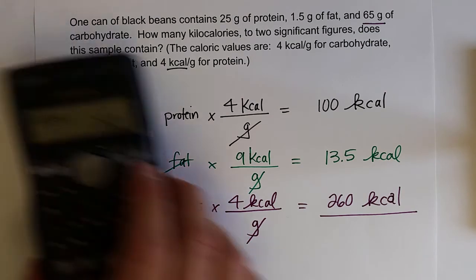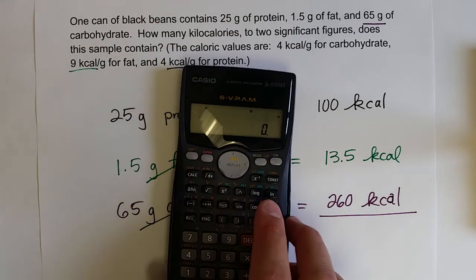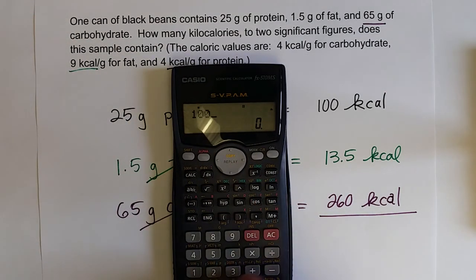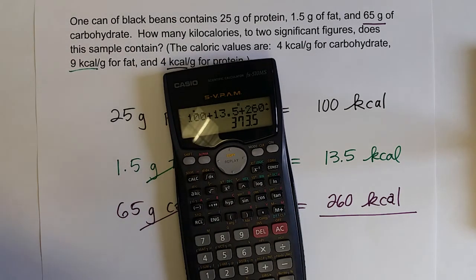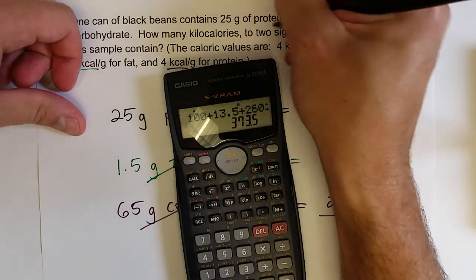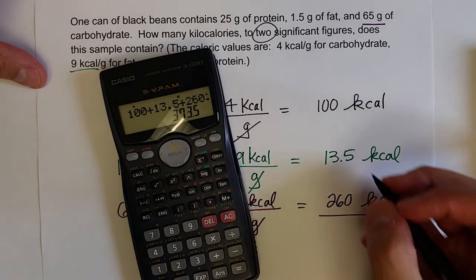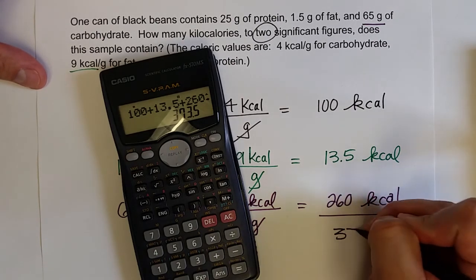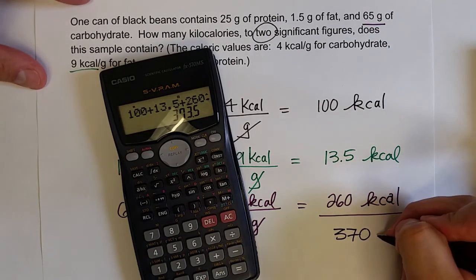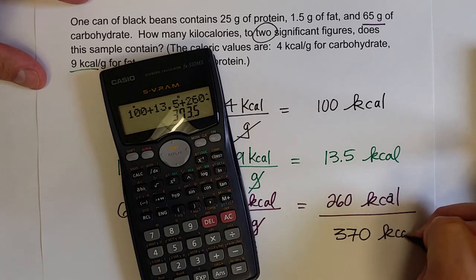And the last thing we would do is just add all those values up. So 100 plus 13.5 plus 260. So that's 373.5, and this question asks us to answer it with two significant figures. So that's going to be 370 kcals.